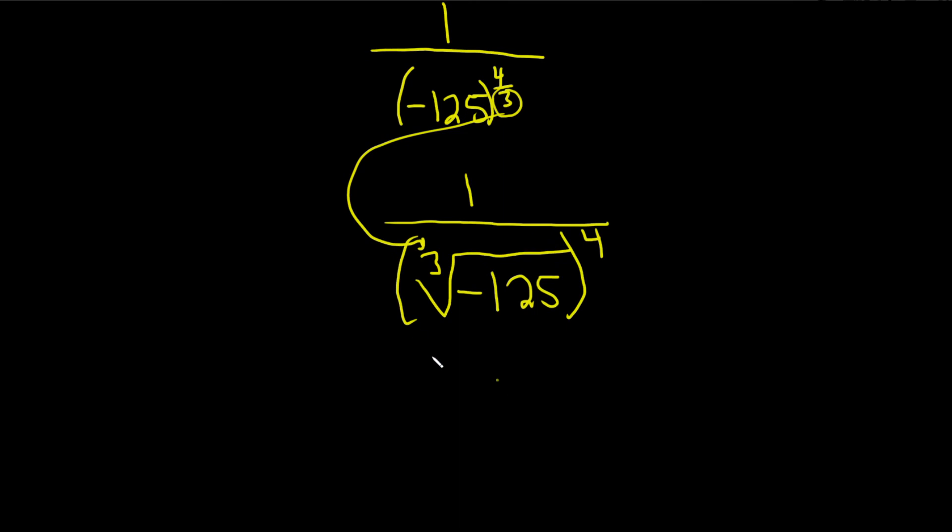So when we're taking the cube root of negative 125, because it's a cube root, the negative will stay there. So basically the answer is going to be negative, and then the cube root of 125 is five. So again, because this is a three, because it's odd, the result is always negative. So you just take the cube root of 125, which is five, and then we still have the four.